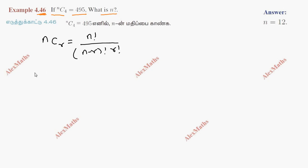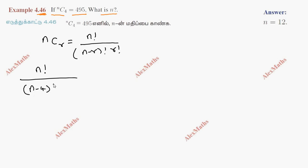So in the expansion, nC4 is n factorial divided by n minus 4 factorial into 4 factorial. Now, this equals 495.